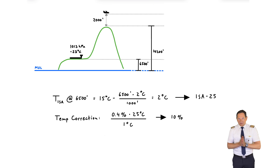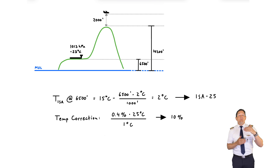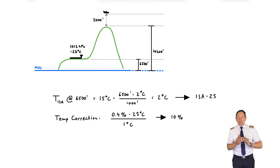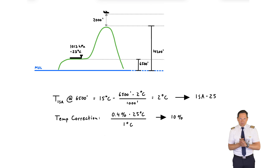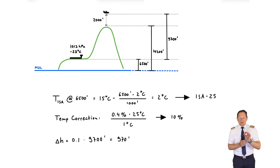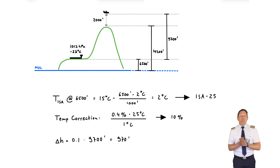Be careful here — the temperature correction is only applied to the air above the reporting station publishing the QNH, because the remainder of the column of air below the station, down to sea level, is already being corrected for, since this is a QNH and not a QFF. So this factor is therefore only applied to this part of 9,700 feet, resulting in a correction of 970 feet.